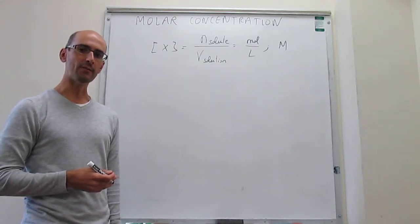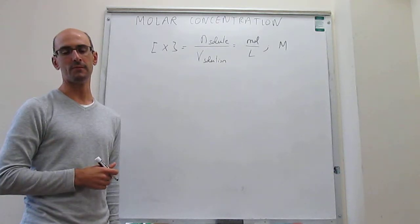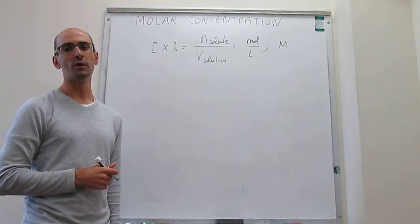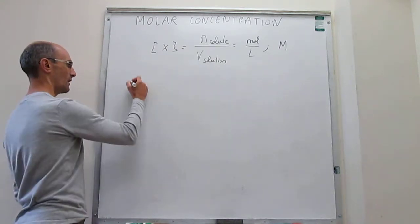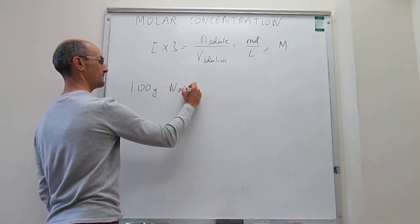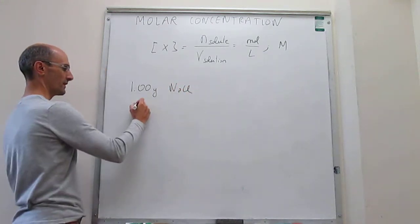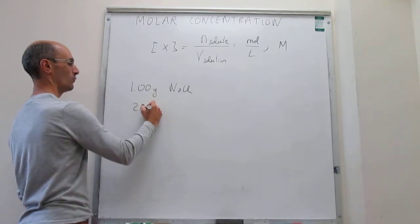Let's then carry out an easy calculation to exemplify what this molar concentration is. What we're going to do is we're going to take one gram of sodium chloride, table salt, and we're going to dilute it with enough water to get to 215 milliliters volume.